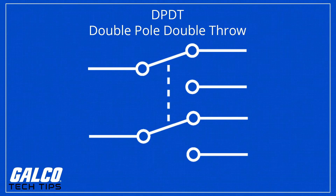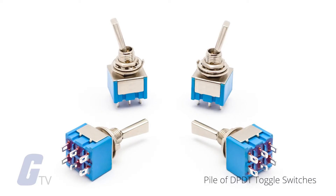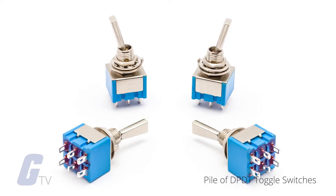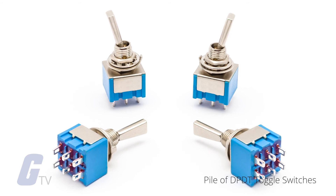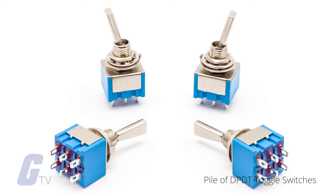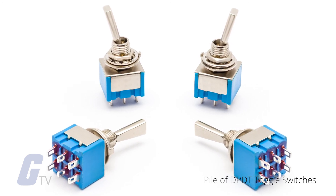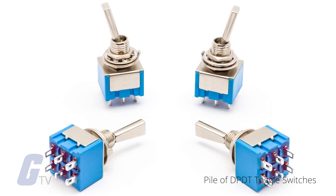Finally, the double pole, double throw or DPDT is essentially equivalent to two SPDT switches. This means that there are two separate circuits that connect two inputs of each circuit to one of two outputs.